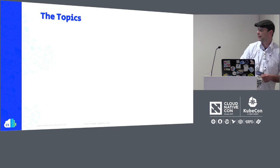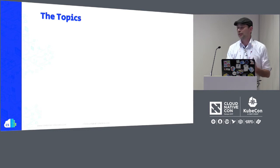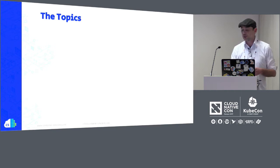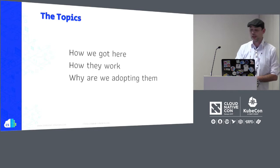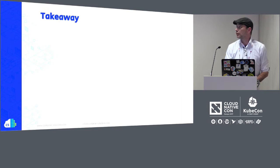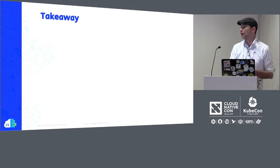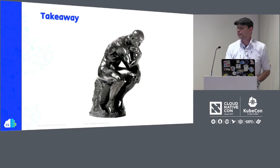So that was the history lesson for today. Nothing we're doing is really new — we've been dealing with the same problems for a long time. We're going to cover three things today: first, how we got to where we're at right now discussing binary protocols; second, how binary protocols work; and third, why we are adopting them at this time. Hopefully, if you already know this information, you'll walk away with a sense of smug satisfaction. And if you don't, hopefully it'll help you think about what it means to be writing microservices in a cloud-native environment.